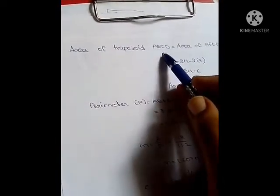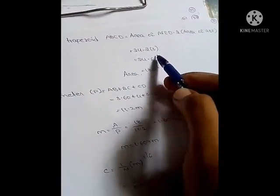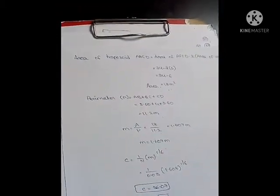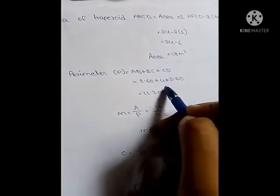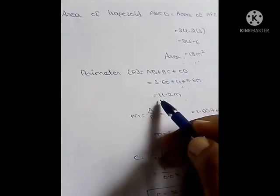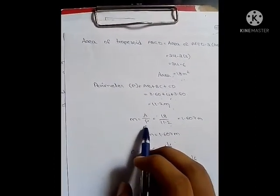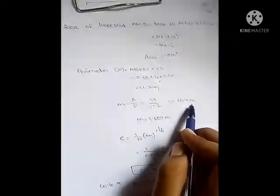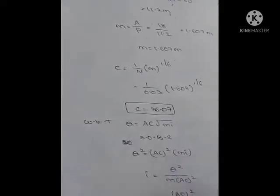Area of trapezoid equals area of rectangle minus 2 into area of triangle, which is 24 minus 2 into 3 equals 18 meter square. Hydraulic mean depth m equals A by P, which is 18 by 11.2, giving m equal to 1.607 meters.